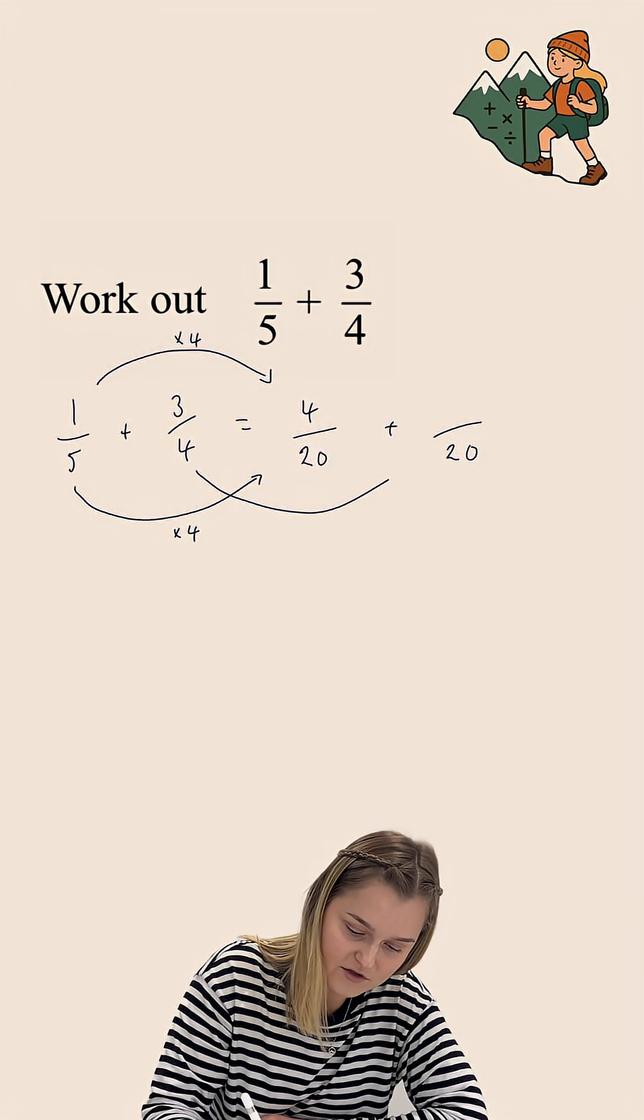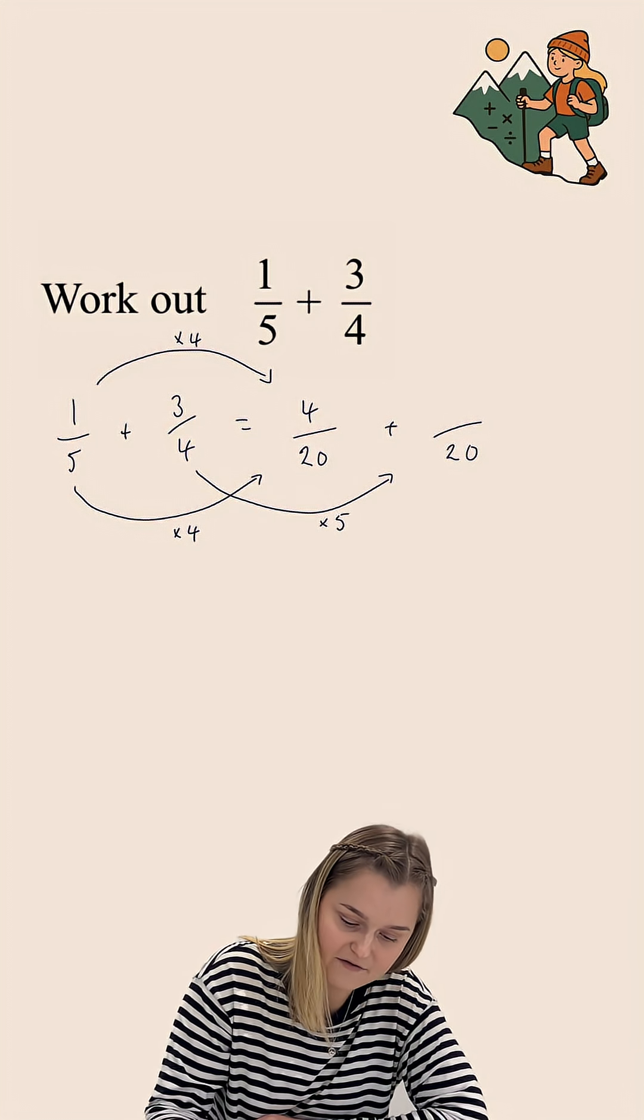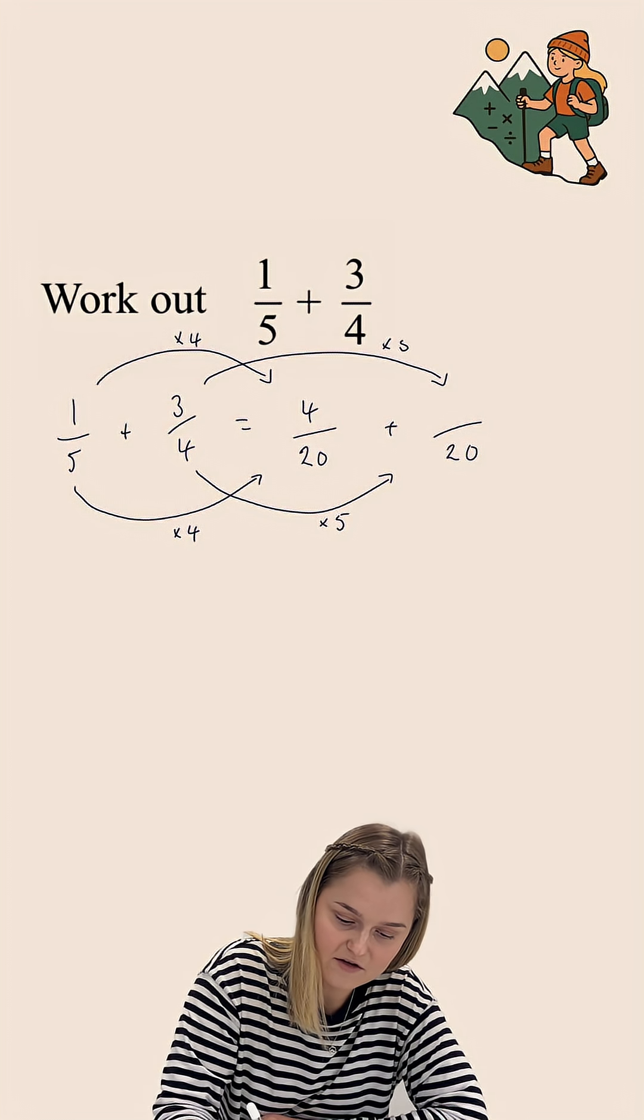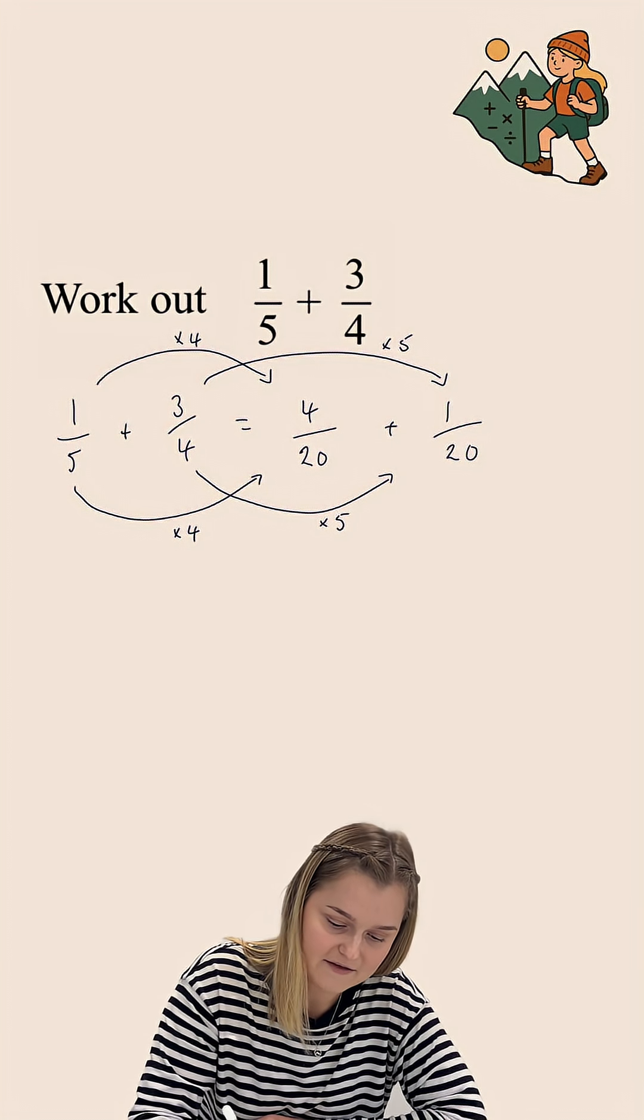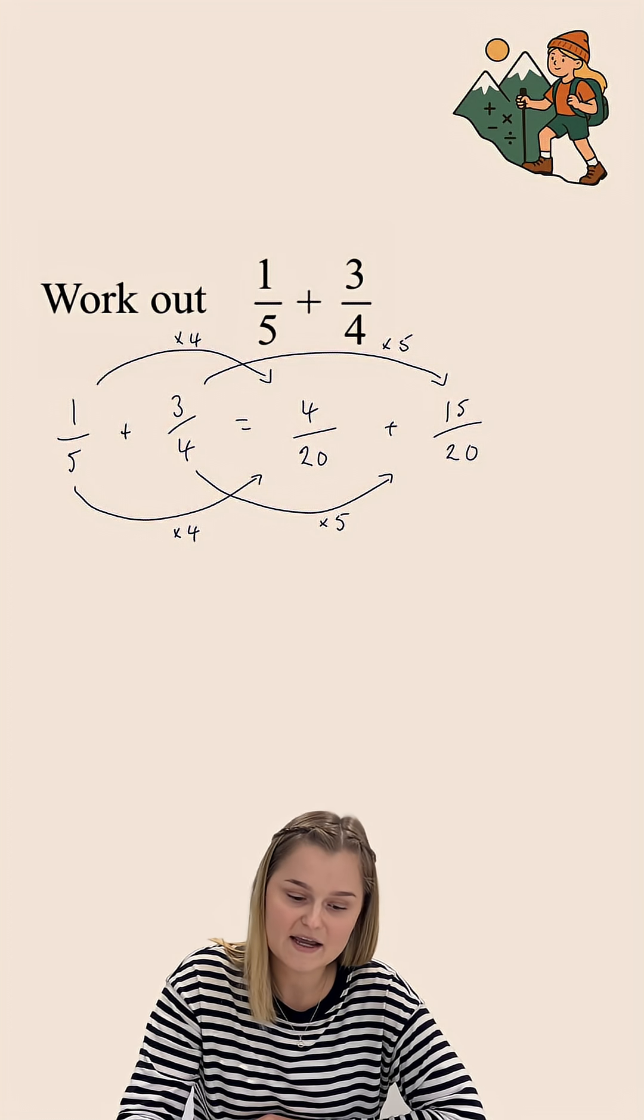Then, to get from 4 to 20, we have multiplied by 5. And so, we are going to do exactly the same with the numerator of that fraction. 3 multiplied by 5 gives us 15. Once we get to this point,